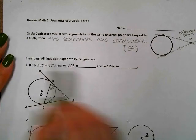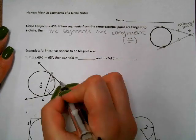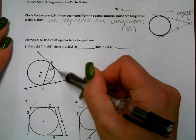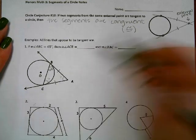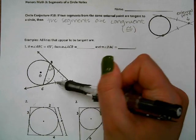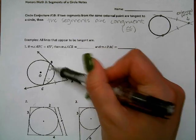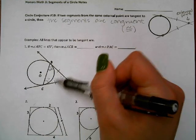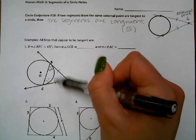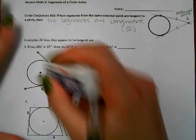We have two tangent lines — they say all lines that appear to be tangent are. So the tangent from B to A and the tangent from C to A means that these two segments are equivalent, which means that triangle ABC is an isosceles triangle. In isosceles triangles, the side and the angle across from it have a relationship — if these two sides are the same, then the angles that correspond to them have to be the same as well.